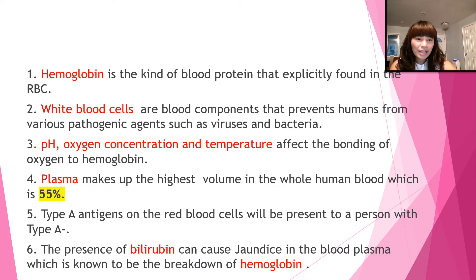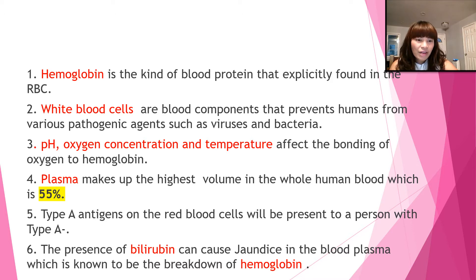Number one: hemoglobin is the kind of blood protein that is explicitly found in the RBC, or red blood cells. Number two: white blood cells are blood components that protect humans from various pathogenic agents such as viruses and bacteria.